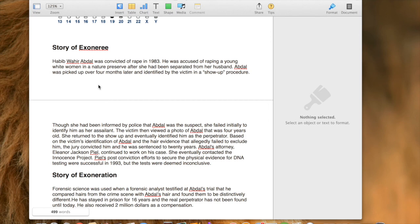Story of Exoneration. Forensic science was used when a forensic analyst testified at Abdel's trial that he compared hairs from the crime scene with Abdel's hair and found them to be distinctively different. He stayed in prison for 16 years and the real perpetrator has not been found until today. He also received $2 million as compensation.